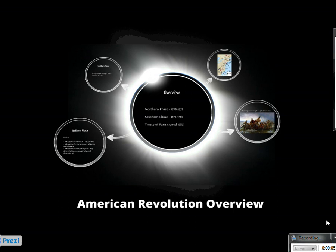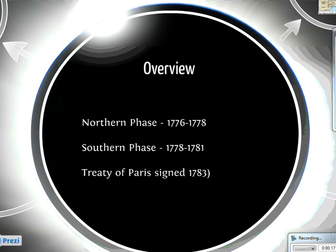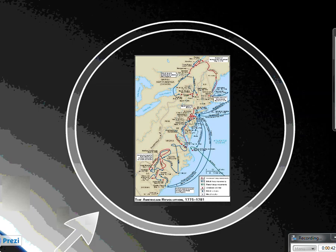We are going to take a quick overview look at the American Revolutionary War. It can generally be split into two phases: the first from 1776 to 1778, when we declare independence in '76, and then a turning point — a shift to what is called the southern phase, 1778 to 1781, when fighting stops. The Treaty of Paris is not officially signed until 1783.